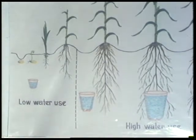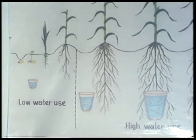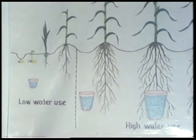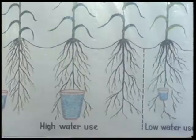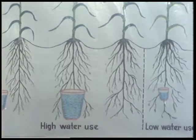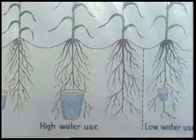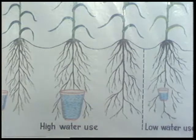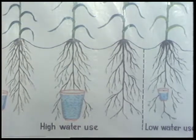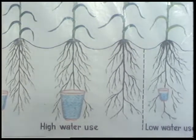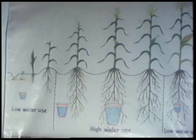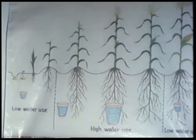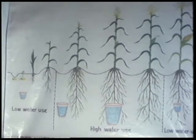The water requirement of plants varies with the stage of their growth, and this requirement varies from plant to plant. Generally, the plant needs less water when it is young. And when it is shooting, booting, and heading, its water need increases. As it approaches maturity, it does not need as much water for further growth.